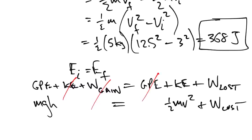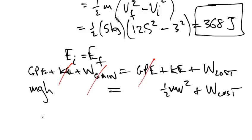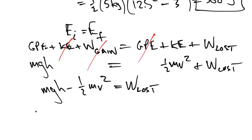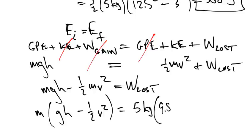This is mgh is equal to one-half mv squared plus work lost. And so, what we would do is we would say mgh minus one-half mv squared is equal to the work that's lost. And hence, if we do a little simplification here and, let's say, factor out the m. And we'd go like this, like this, like this. What's that going to equal? Well, that's 5 kilos times 9.8 times a height of 8 minus one-half times 3 squared.